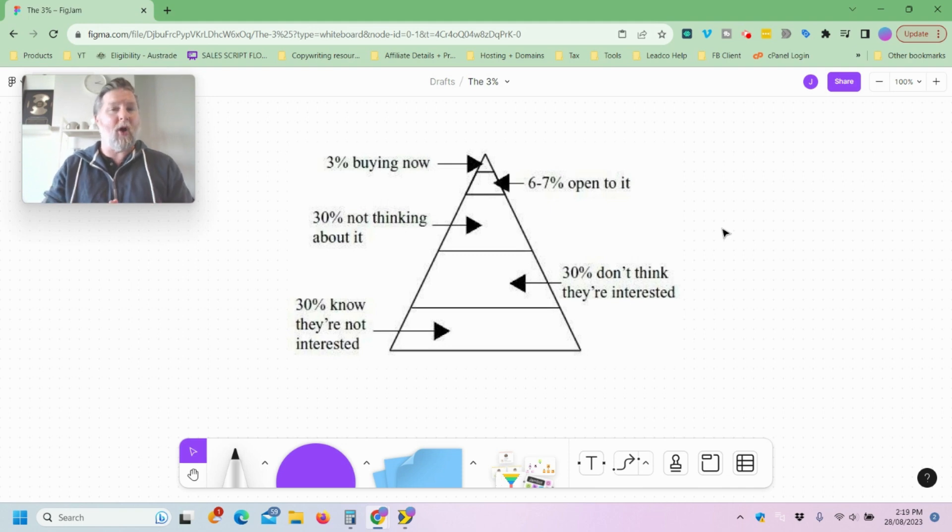However, one thing to bear in mind is what about the people that are in the 3% to 10% range? So the extra 7%, what do you do with those folks? And what about the folks that are in the 30% that are not really thinking about it at this moment? And then the other 30% that don't ever think that they're interested at all? And what about the people that know that they're not interested? Well, of course, we're not going to be able to sell to the people that know they're not interested and there's no point in doing so.